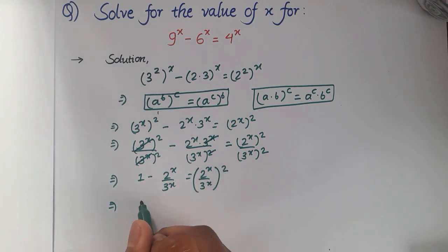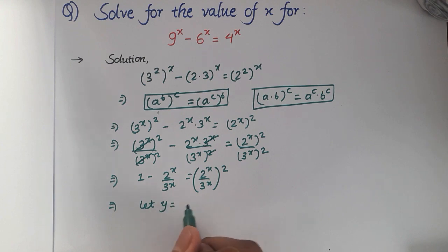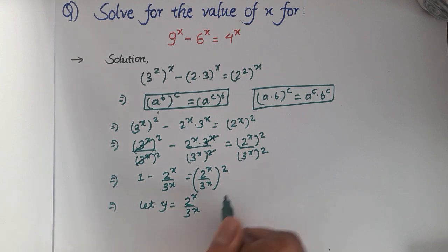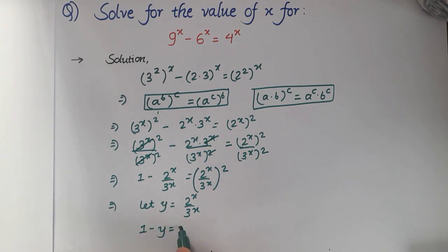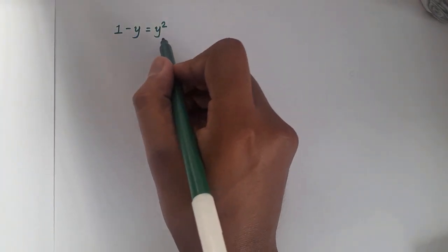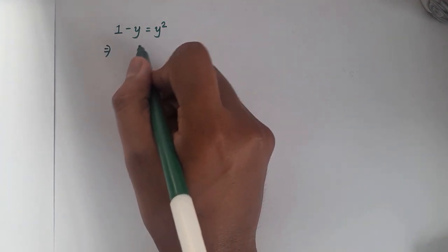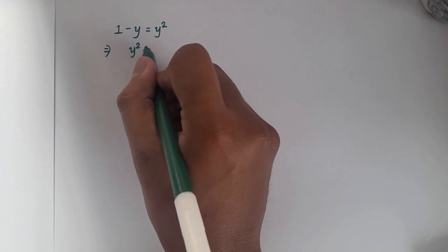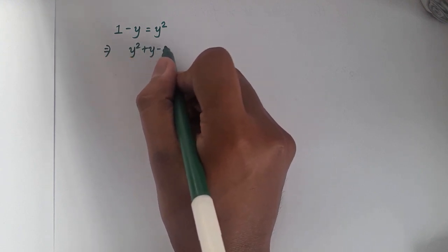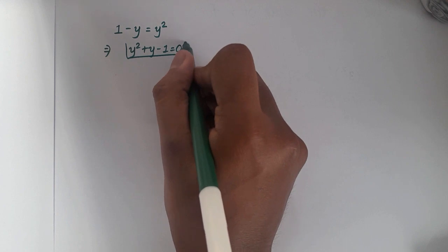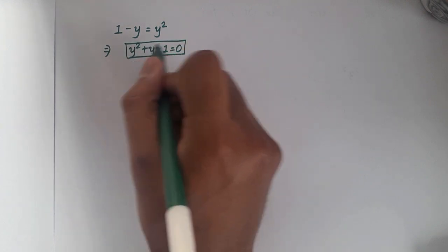Now let us say that y is equal to 2 power x over 3 power x. If we replace this value in the equation, we will have 1 minus y is equal to y squared. So now we have the equation 1 minus y equals y squared. On subtracting 1 minus y on both sides, we will have y squared plus y minus 1 is equal to 0, and this is a quadratic equation in y.